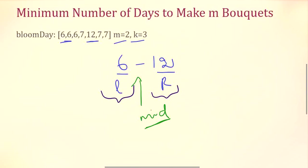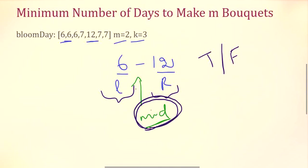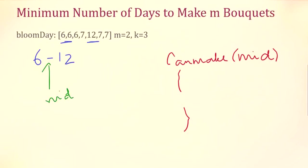The condition function returns a boolean — true or false — based on whether we can make m bouquets with k flowers by waiting mid days. If mid days are enough and we can make enough bouquets, we set our search from left to mid. If we cannot make enough bouquets waiting mid days, we set the search space from mid plus 1 to right. Now let's see how the condition function works — let's call it canMake.